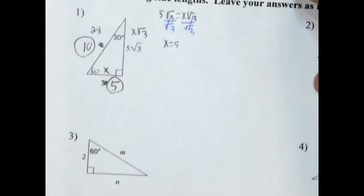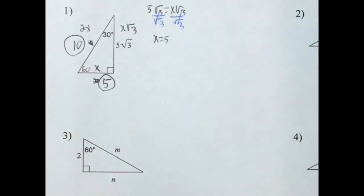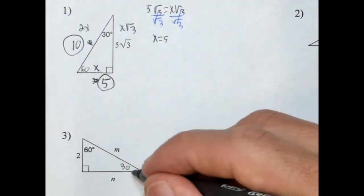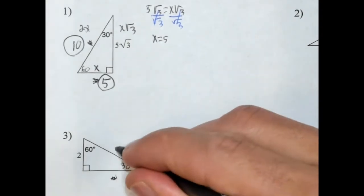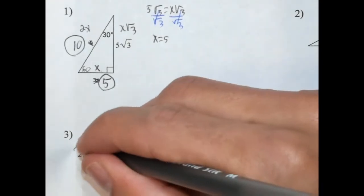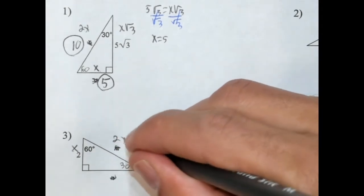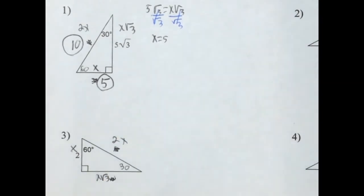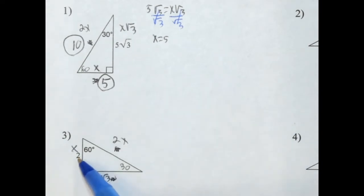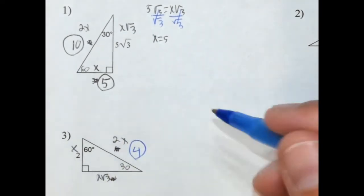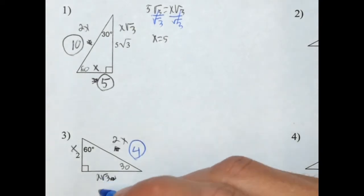Let's go ahead and take a look at the next one. So this is 60, that's 90, that means this is 30. The side opposite the 30-degree angle will be x. This will be 2x, and this will be x radical 3. It's not bad when they give us the x. So this is 2, that means 2 times 2 is 4. And then this is 2, it's going to be 2 radical 3.